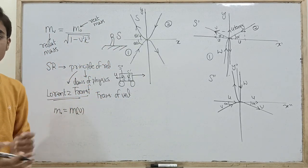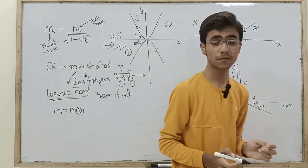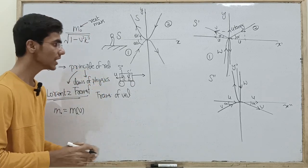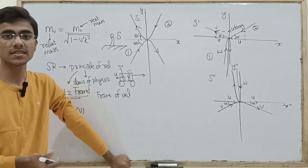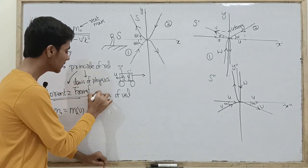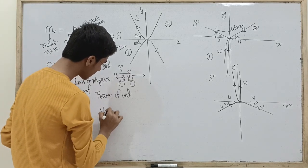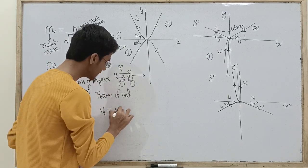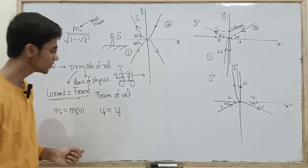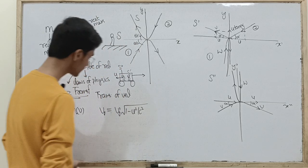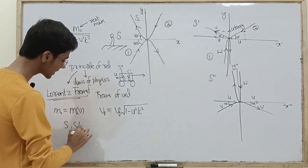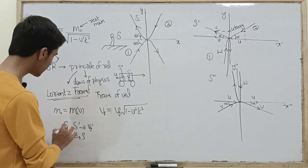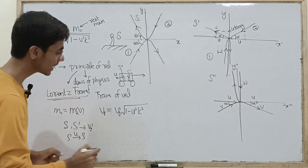In a moving frame of reference which moves horizontally with speed U, if you have a particle with a vertical velocity in the upward direction, then for a ground observer looking at that same particle, the vertical velocity observed will be the vertical velocity observed in the moving frame times the square root of 1 minus U² by C². This is the relativistic velocity transformation for the vertical component.